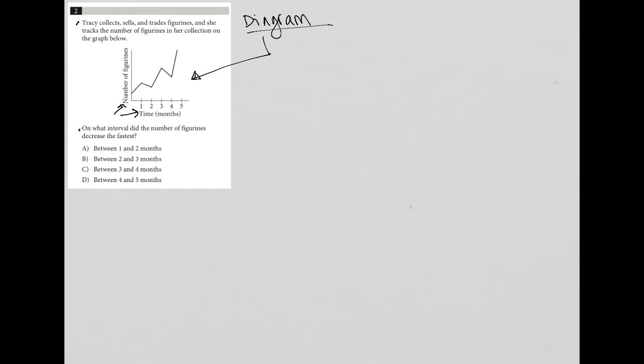The question continues on to say, on what interval did the number of figurines decrease the fastest? So on a graph, fast increase or decrease really has to do with slope, which visually you can think of as steepness.